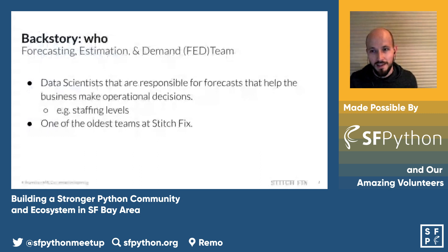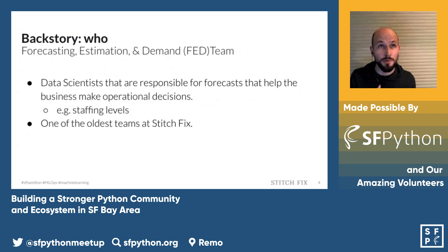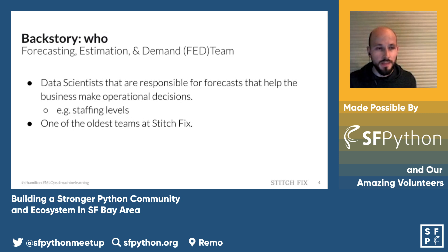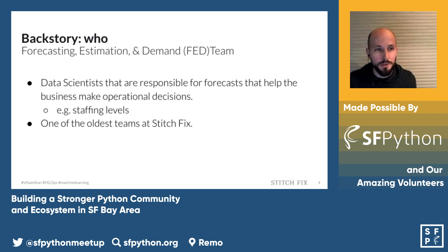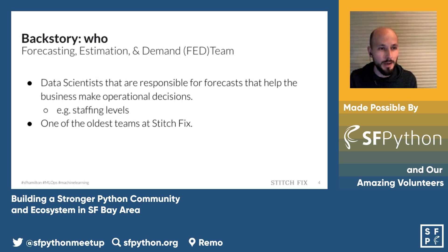First, the backstory. At Stitch Fix, we have 130-plus data scientists whose job is to help different parts of the business make better decisions. One team is called the Forecasting Estimation and Demand team, or FED for short. They're responsible for making forecasts to help the business make operational decisions — for instance, how many warehouse workers or stylists should be on staff and when.